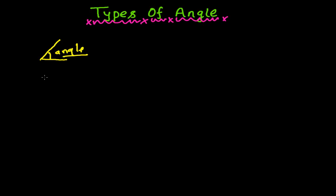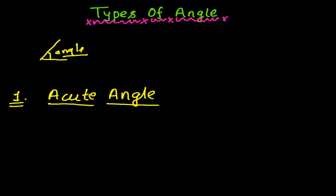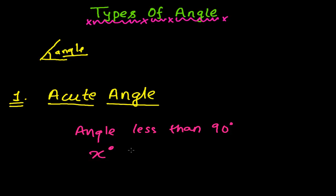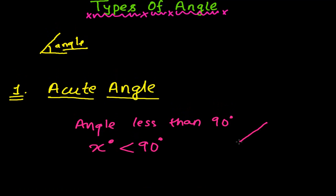There are many types of angles. The first type we are going to learn is the acute angle. What is an acute angle? An acute angle is any angle that is less than 90 degrees. Suppose some x degrees less than 90 degrees. For example, this is line PQ and this is point R — the angle formed is less than 90 degrees, suppose 45 degrees.